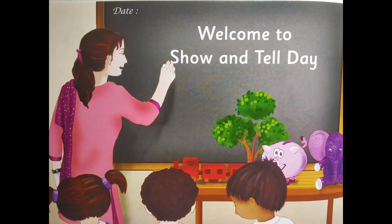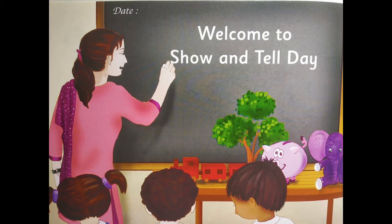Now let's turn to the first page of the storybook. Look at this picture carefully. My first question: can you name all the things you see in this picture? I can see a blackboard, someone writing on it, a table, and on the table there are some objects — a tree, an elephant, and a pig. I can also see some children sitting; I can only see their heads, but there are three children sitting in this picture.